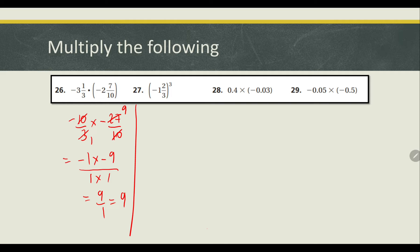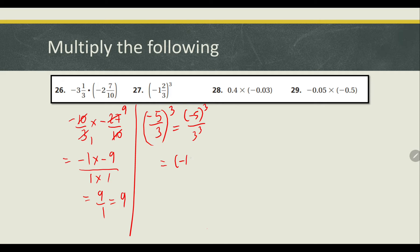For the next one, first convert into an improper fraction. We have negative 5 over 3 to the power of 3, which equals negative 5 cubed over 3 cubed — that's negative 5 times negative 5 times negative 5 — giving us negative 125 over 27. For this next one, we just do normal multiplication.